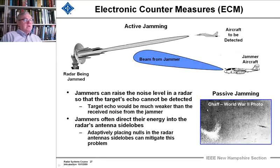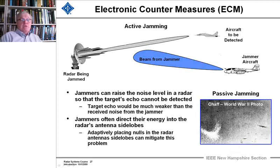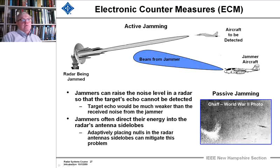Electronic countermeasures. There are two kinds, really. This is a World War II photo of chaff — they called it 'window' then — being dropped by bombers to obscure bomber formations from German aircraft interceptors and ground-based radars. That's called passive jamming. There can also be active jamming, where a plane with a huge transmitter sends energy toward the radar, putting a large signal into the side lobes of the antenna and lowering the signal-to-noise ratio so the aircraft can't be detected. That's one reason we want to put nulls in the side lobes in the direction of the jammer.